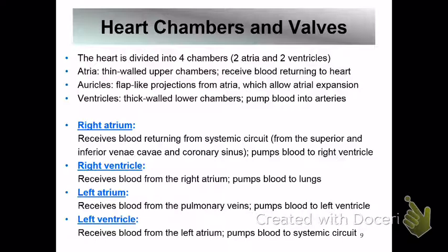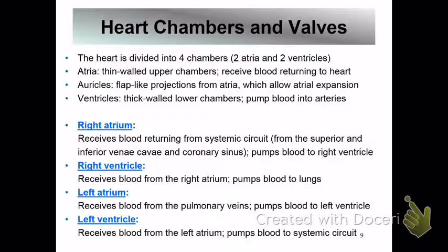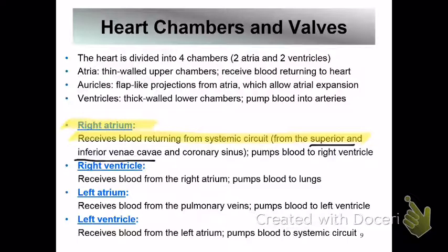The heart has four chambers: a right atrium and a left atrium — atria is the plural form — and two ventricles. The atria are thin and small at the top; those little flappy appendages are called auricles and that's on the lab test. Ventricles are thick-walled. The right atrium receives blood from the superior vena cava, the inferior vena cava, and the coronary sinus.